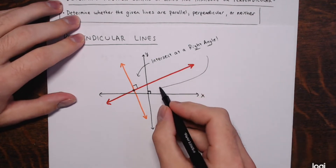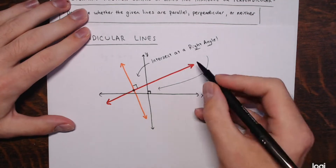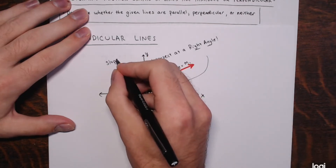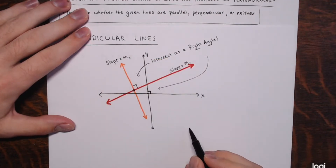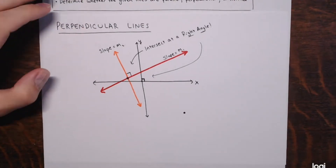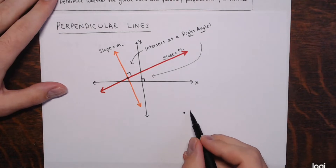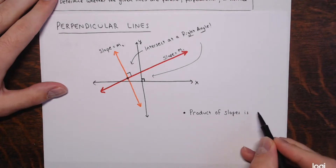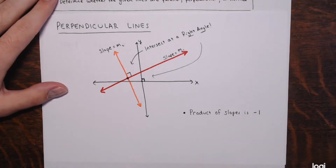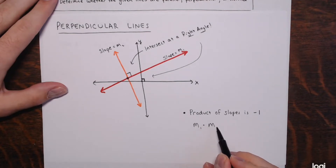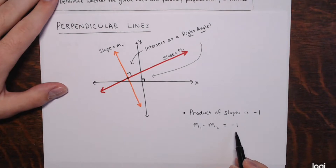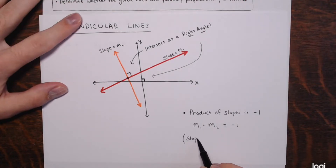Say the slope of this red line is m1 and the slope of the orange line is m2. One special thing about the slopes of perpendicular lines: the product of their slopes is always going to be negative 1. So if you take m1 times m2, you get negative 1. You've got to remember that. Another way to say this is that the slopes are opposite reciprocals, or negative reciprocals, of one another.